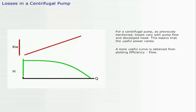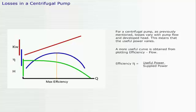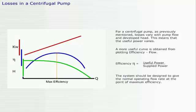For a centrifugal pump, as previously mentioned, losses vary with pump flow and developed head. This means that the useful power varies. A more useful curve is obtained from plotting efficiency to flow. Efficiency equals useful power divided by supplied power. The system should be designed to give the normal operating flow rate at the point of maximum efficiency.